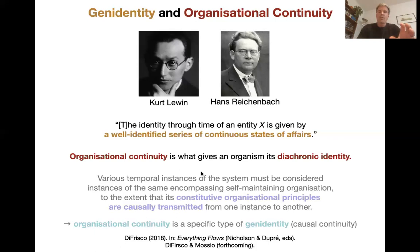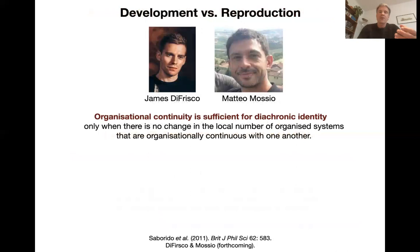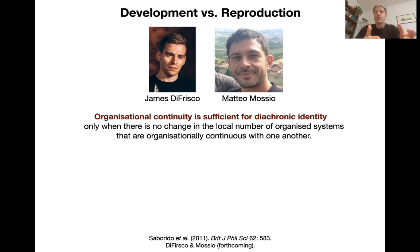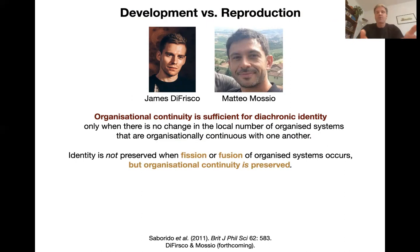So why am I telling you all this? Because there is a problem here with reproduction. Organizational continuity is what defines your diachronic identity, but it is only a sufficient condition for your diachronic identity when there is no change in the local number of organized systems that are continuous with one another. So imagine that you have children — there is a causal organizational continuity between you and your offspring, but you are not identical to them. They are different individuals. So identity is not preserved when fission or fusion of organized systems occurs.